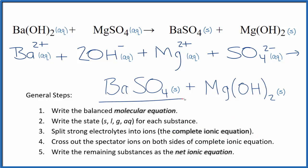And note again, we didn't split these solids apart in the net ionic equation. Only the strong electrolytes, the ones with aqueous after them. So this is the complete and net ionic equation for Ba(OH)2 plus MgSO4.